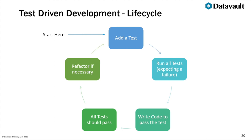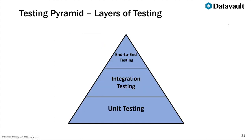I briefly mentioned the layers of testing in software development. This is a simplified version — there are many names for these layers — but boiling it down to three: at the lowest level we have unit tests, in the middle ground are integration tests, and at the top of the pyramid is end-to-end testing.